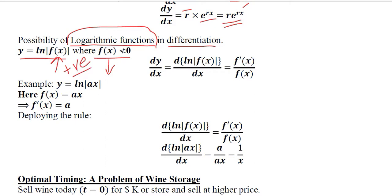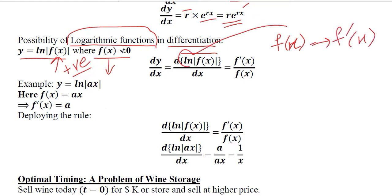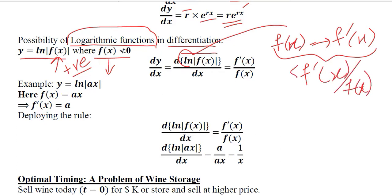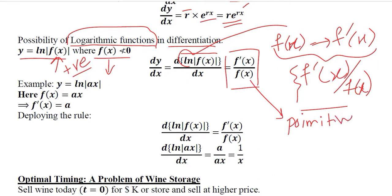For dy over dx, the procedure is simple: I need to calculate the derivative of the function that is inside the natural log. Then I calculate its derivative — the two values I need — because we simply calculate the ratio of the derivative and the original function. That ratio is the derivative of the natural log of the function. We divide the derivative of the function by its original or primitive function.